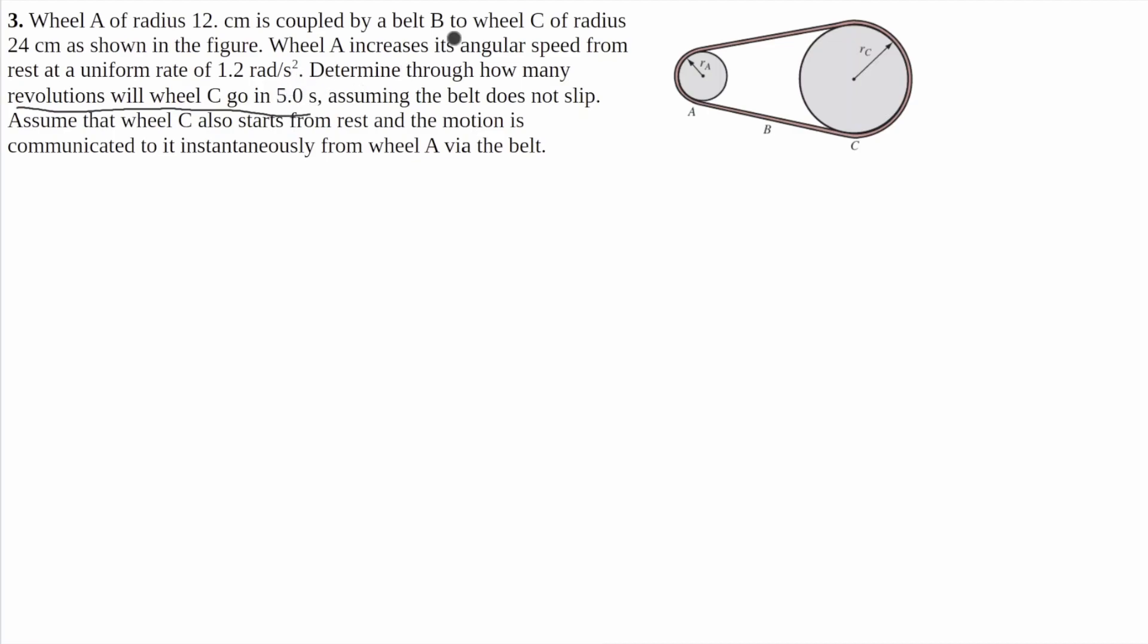So to start, I'll write what I know. I know that wheel A has a radius of 12 centimeters, so RA equals 0.12 meters. Radius C is 24 centimeters, so this would be 0.24 meters. And it tells us that wheel A increases its angular speed from rest at a uniform rate of 1.2 radians per second squared.